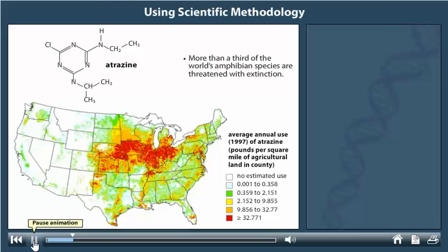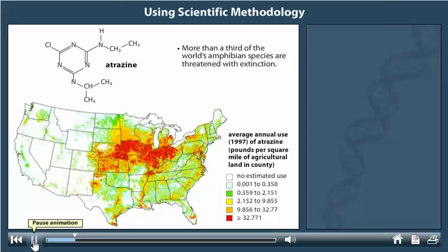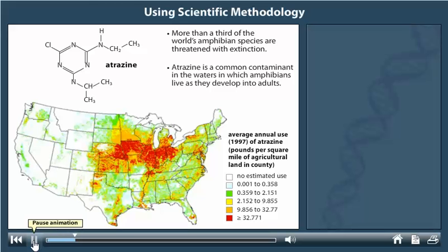Hayes also knew that atrazine is mostly applied in the spring, when amphibians are breeding. Atrazine is a common contaminant in the waters in which amphibians live as they develop into adults.